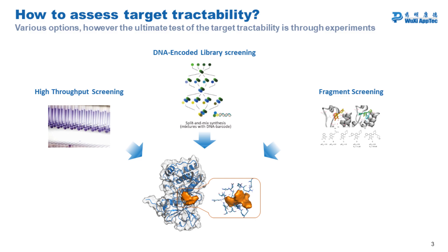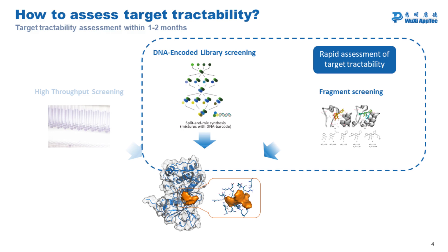How to assess target tractability? The core purpose of experimentally-based ligandability assessment is to get an idea at the earliest possible stage as to whether the target in question can be effectively modulated by a chemical entity with a minimum of committed resources. Historically, this was done with time-consuming high-throughput screening. Nowadays, novel methods are available like DNA-encoded library screening or fragment screening.